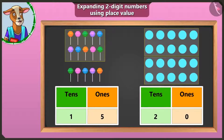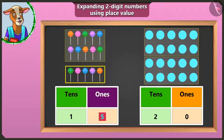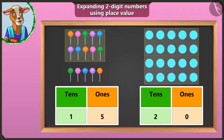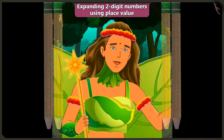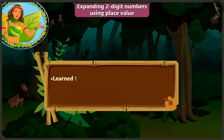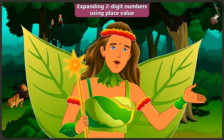So children, remember one thing. As many groups of tens are made, you have to write that number in the tens box. The remaining number will be written in the box for ones. If no number is left, then write zero in the box for ones. In this manner. Yes, I will remember for sure, ma'am. Thank you. Very good. So children, in this video, you have learned to expand two-digit numbers by using place value, which means writing in the box of tens and ones. Now in the next video, we will understand expanding two-digit numbers using place value through examples in a better way.